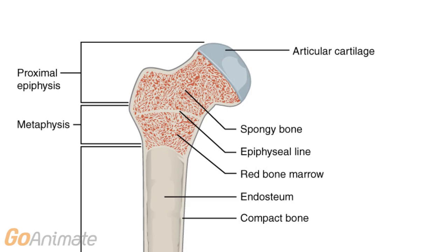The bone matrix also contains sodium, magnesium, potassium, sulfate, fluoride, and hydroxide ions.